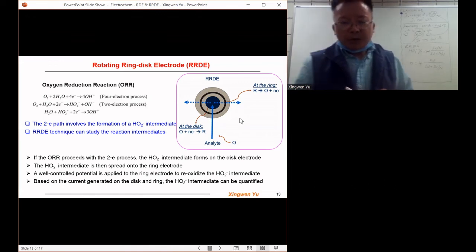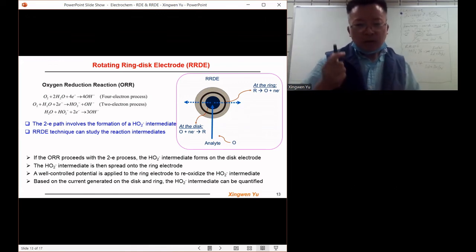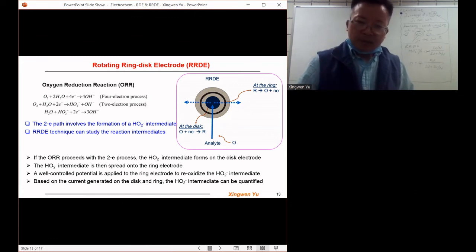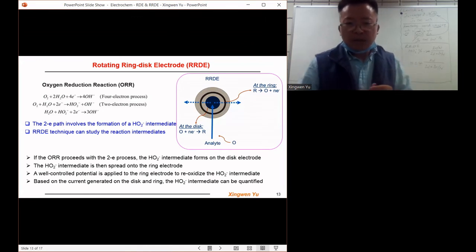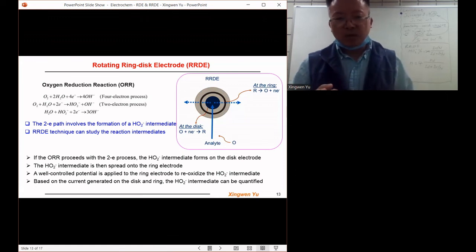So if the electrochemical reaction involves intermediate species, if we apply the potential to the disk electrode, the formed intermediate species will be generated on the disk electrode.